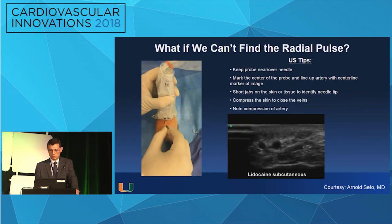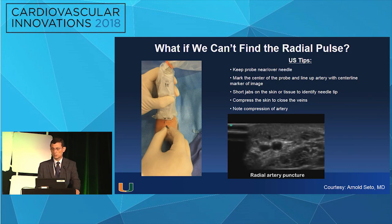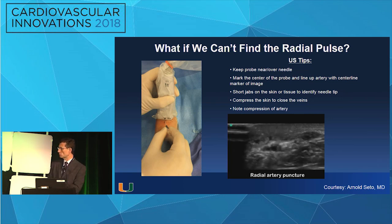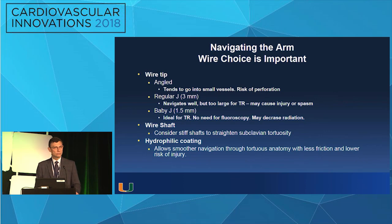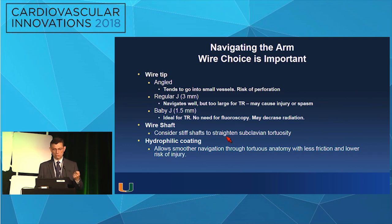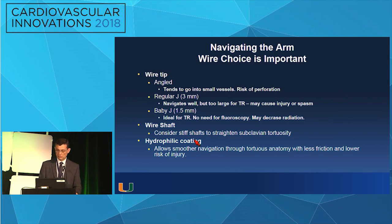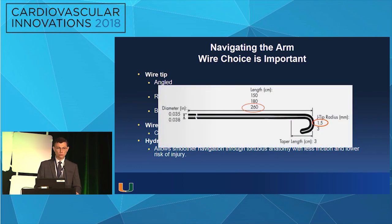Always use ultrasound if you can't feel the pulse — if your lab has an ultrasound, why not use it? In terms of how to navigate the arm, use the baby J wire that has a 1.5 millimeter radius at the tip — it's ideal for transradial. You don't actually need fluoroscopy to go up, which may decrease radiation. If you feel the slightest resistance, always stop and see what's going on. The wire shaft — you can use stiff shafts to straighten subclavian anatomy. Hydrophilic coating is very gentle on tortuous vessels.